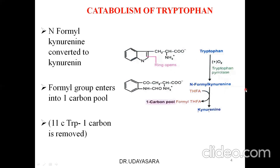The next step is the conversion of N-formylkynurenine to kynurenine. Here, the formyl group is donated to tetrahydrofolic acid, forming formyl-tetrahydrofolic acid, which enters the one-carbon pool. Tryptophan has 11 carbon atoms in total, and one carbon is removed as formyl-THF, so kynurenine has 10 carbon atoms.